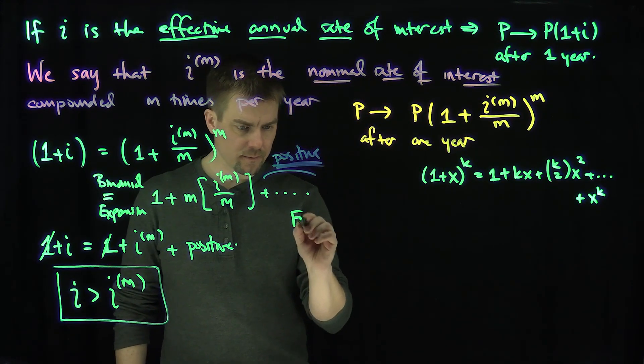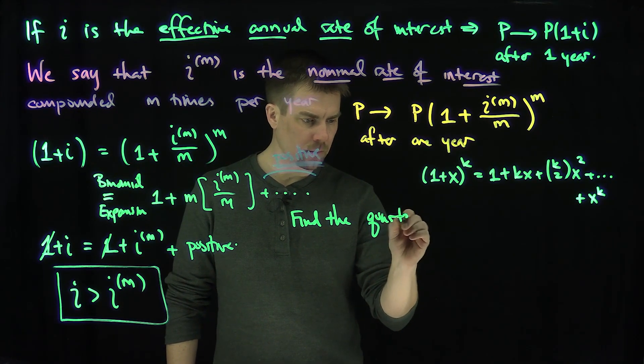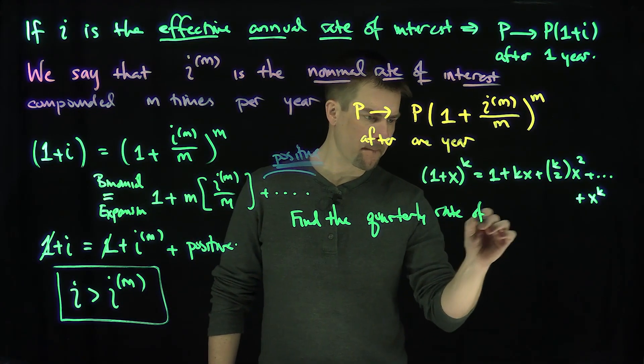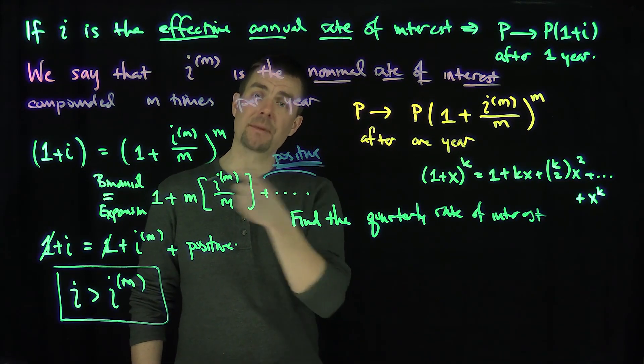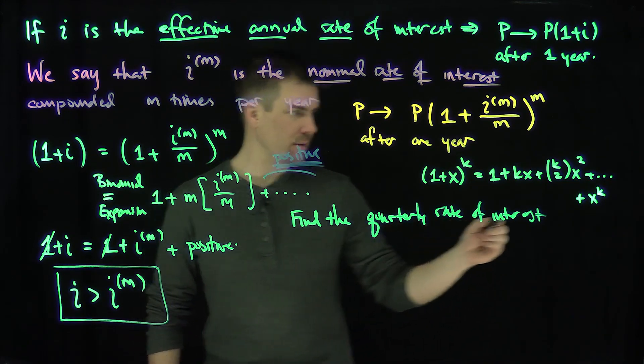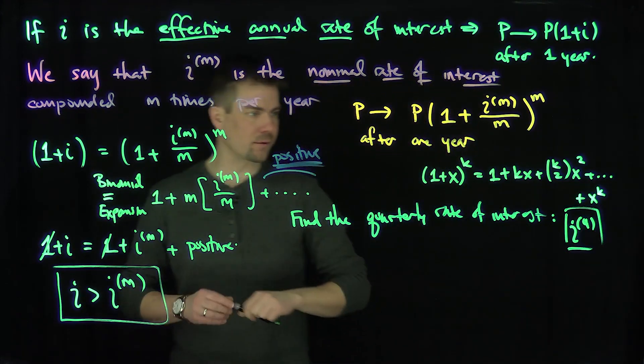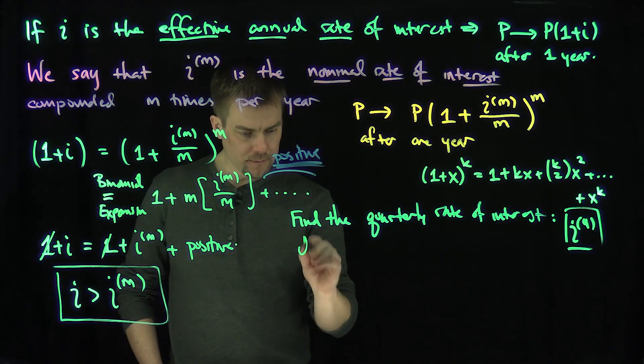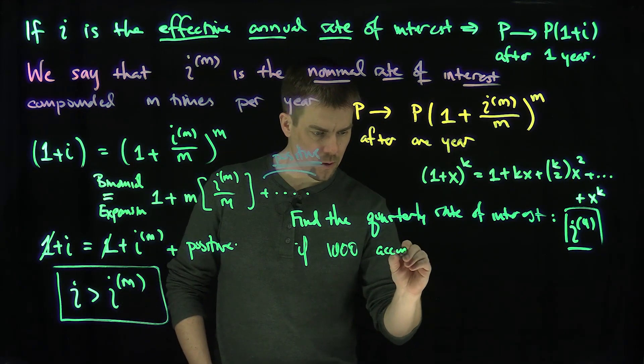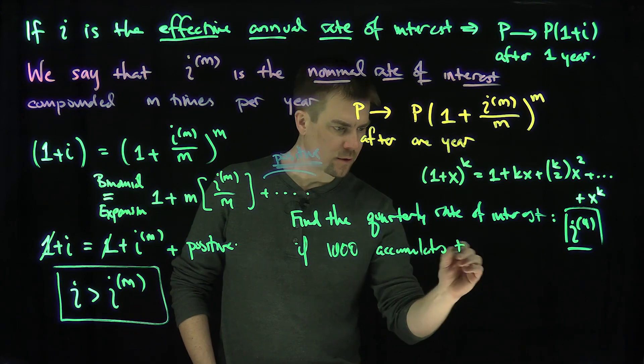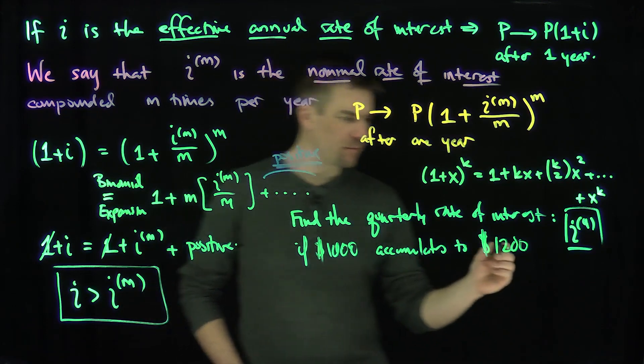Let's find the quarterly rate of interest. So this is, of course, a nominal rate of interest with m equals 4. This is really nothing more than i_4, the effective quarterly interest, if 1,000 accumulates to 1,200 after three years.